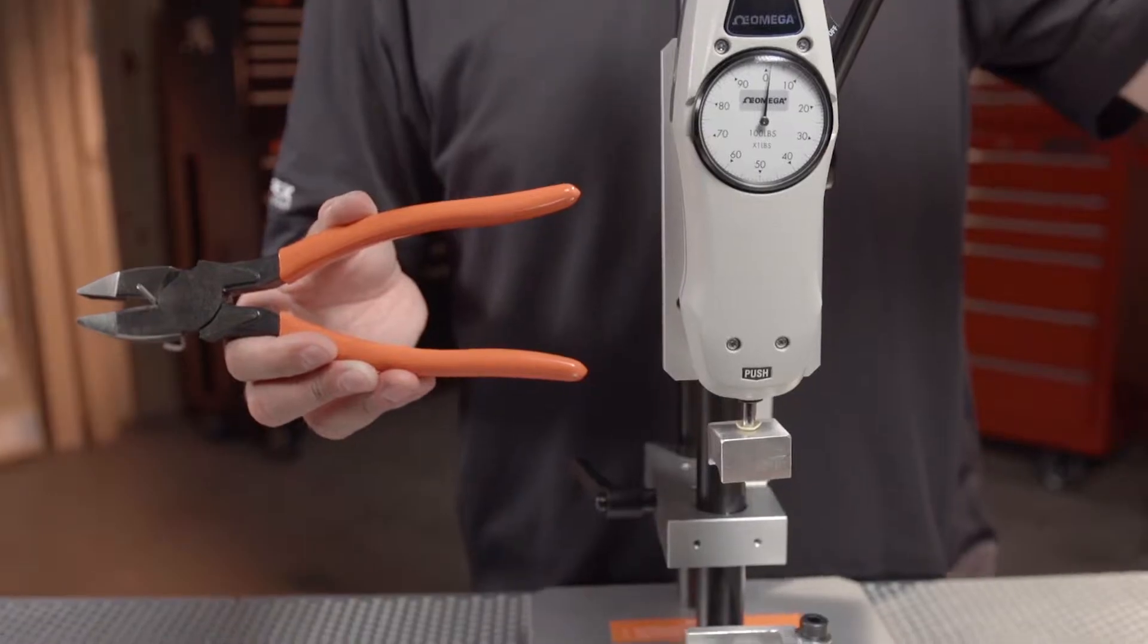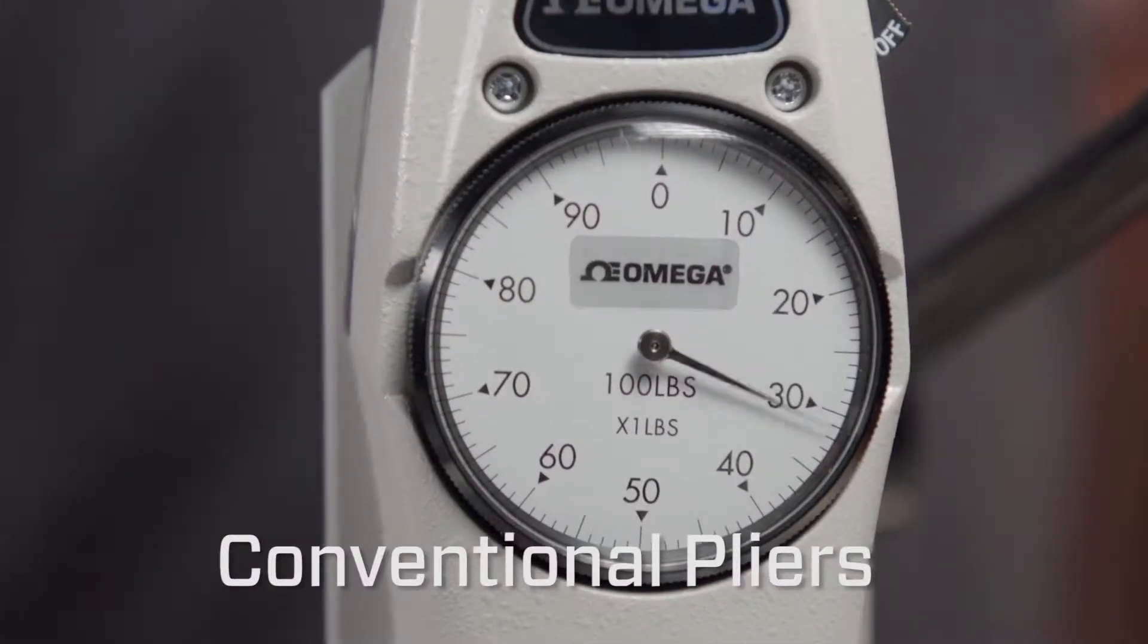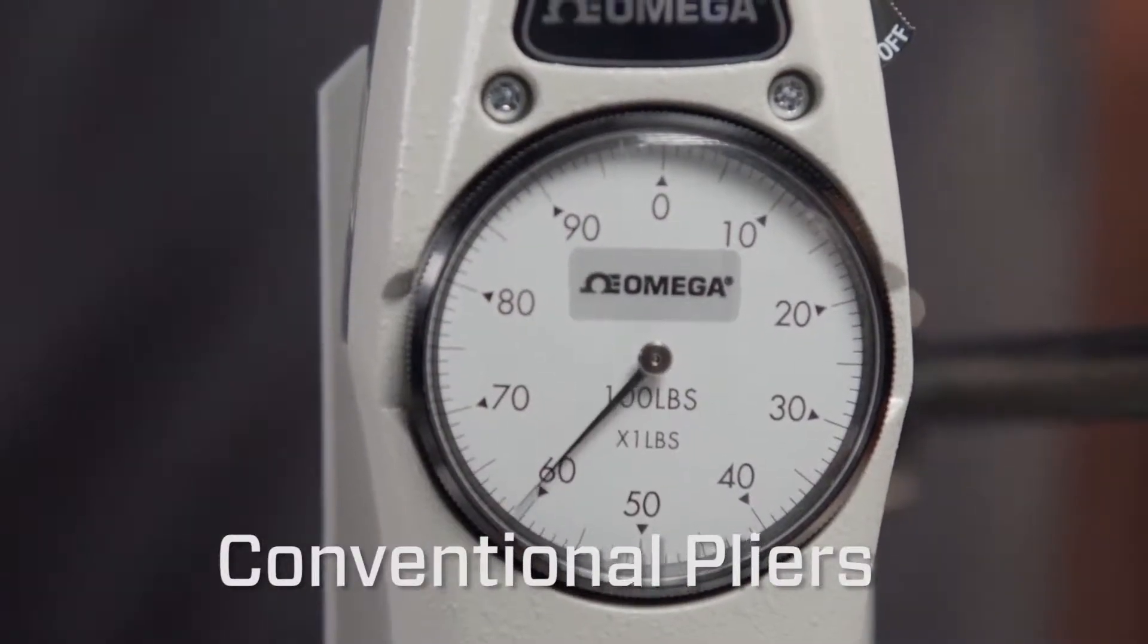For example, to cut hard steel wire, conventional pliers need an average of 60 pounds of pressure at the handles.